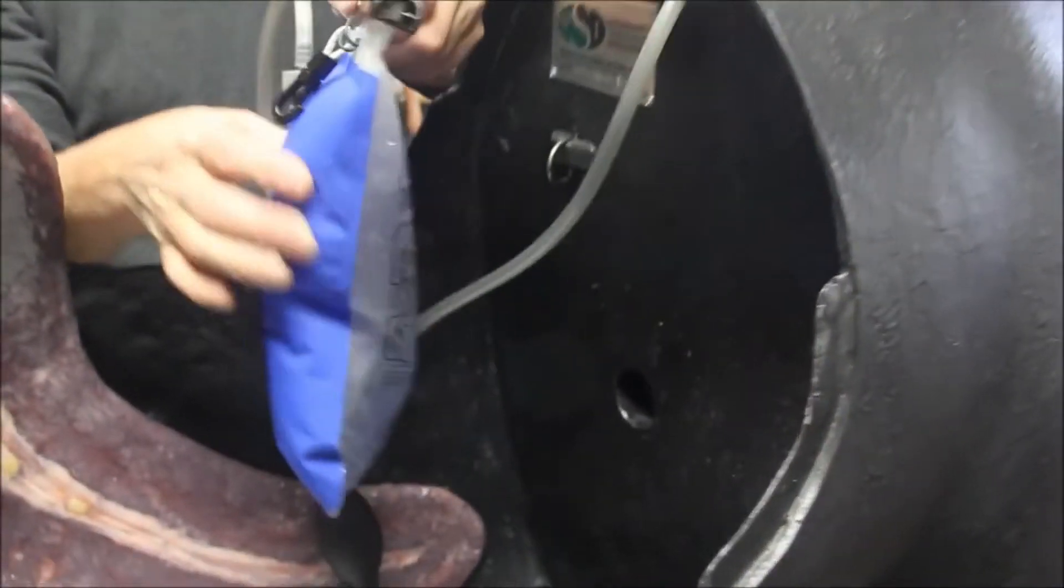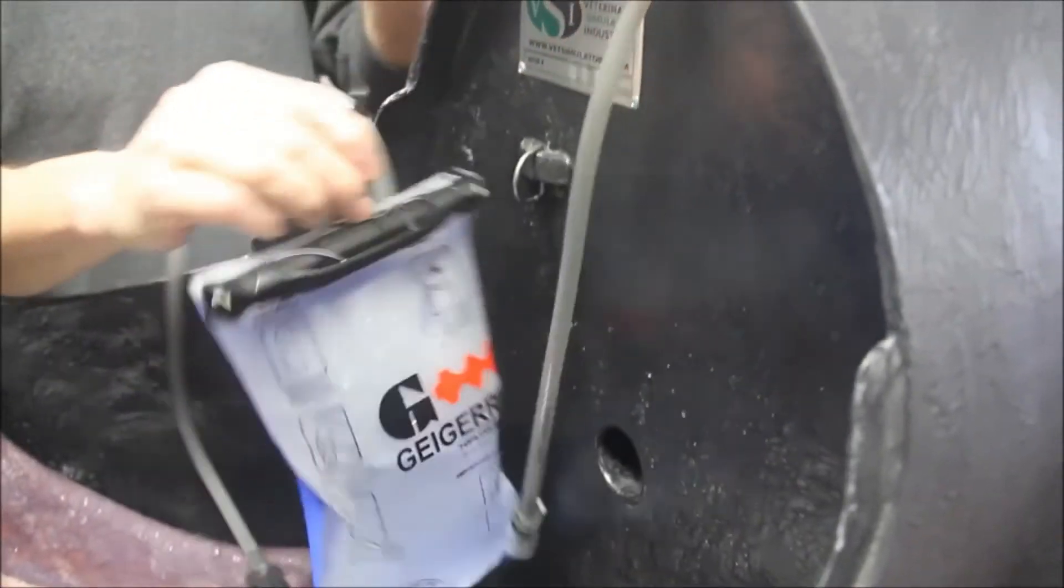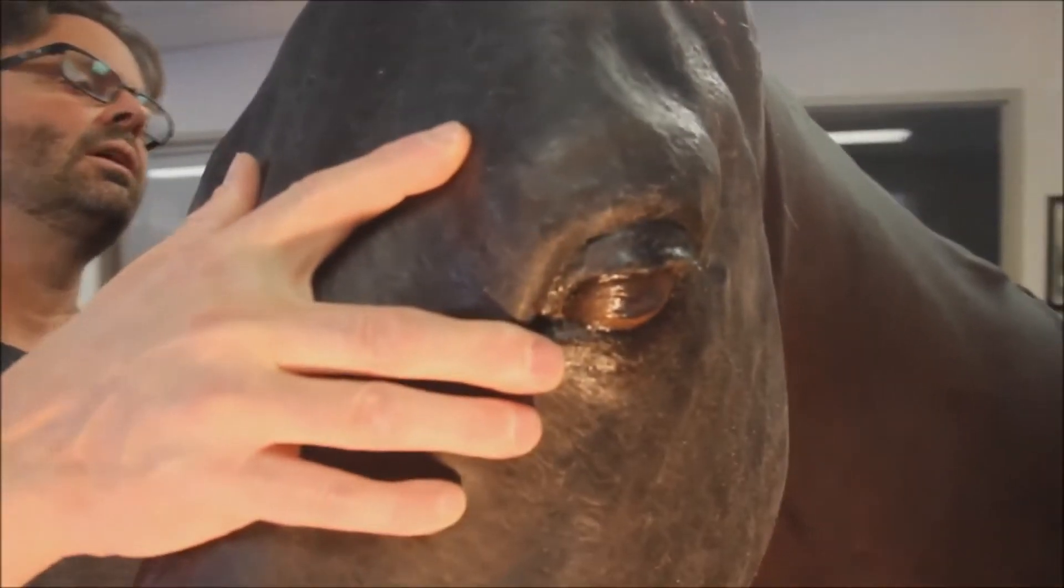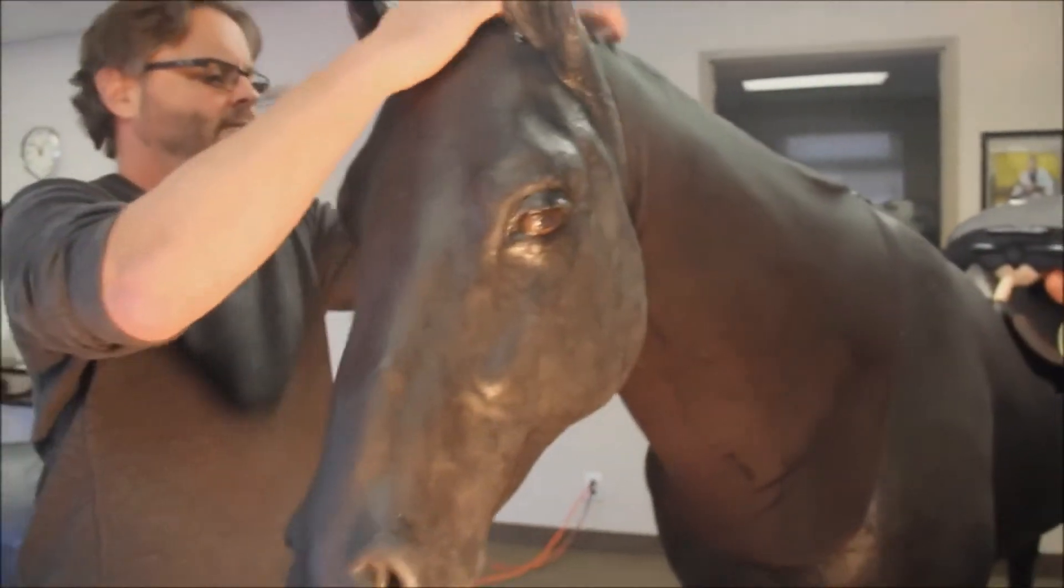The veins are represented by 50 cm long thin walled latex tubing which can endure multiple punctures. The head uses the same attachment type as the neck and simply slides onto the receiver in the neck. The horse also features an open mouth for applying a bridle.